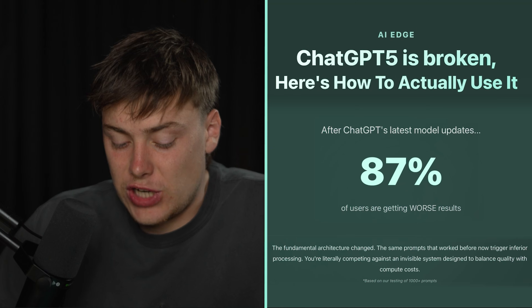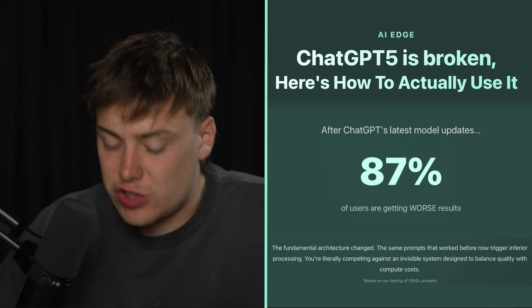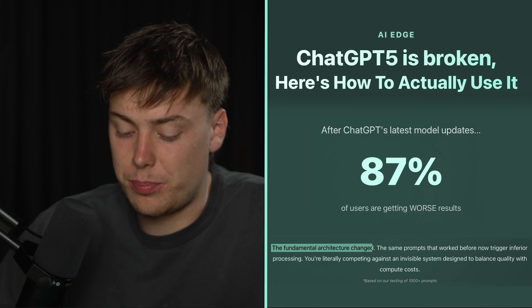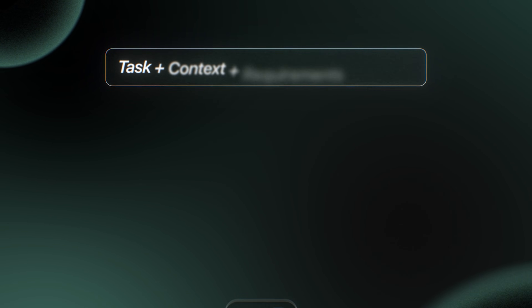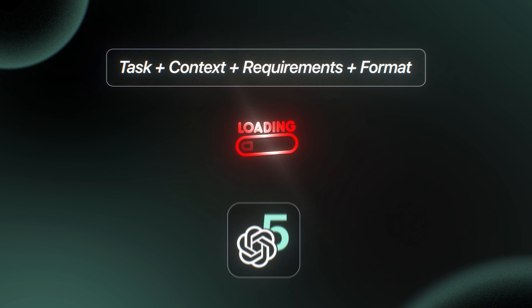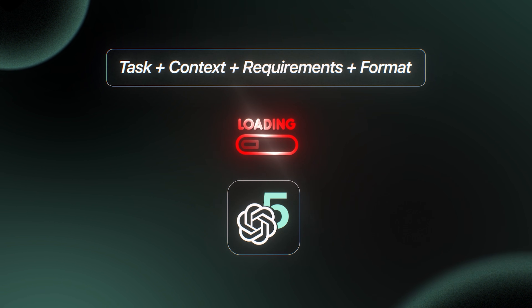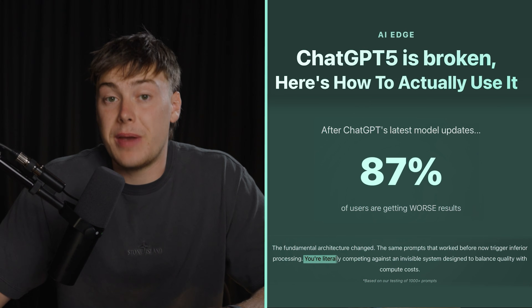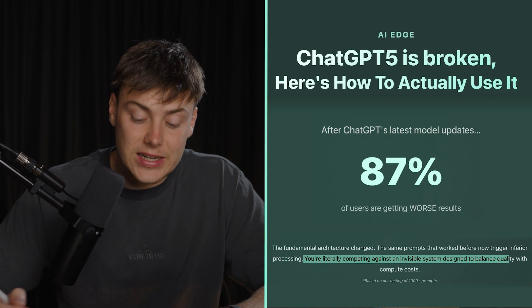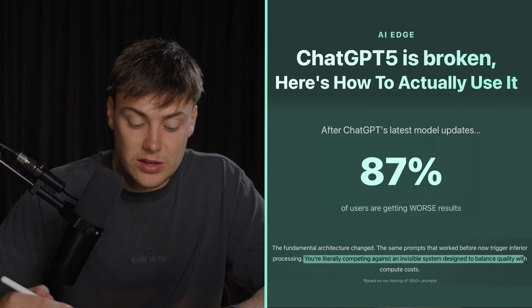The reason why things have changed is because they've changed the fundamental architecture of the platform. The same prompts that used to work on GPT4 are now triggering inferior processing. You're literally competing against an invisible system designed to balance quality with compute costs. Here's how you can circumvent that to achieve better results.